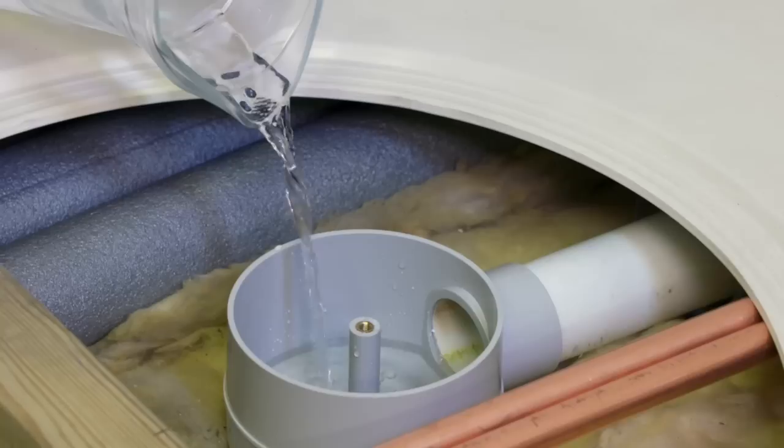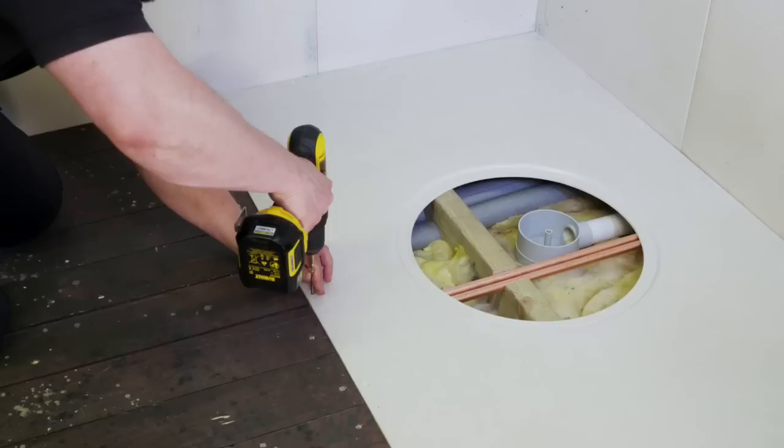Apply solvent weld to the drain outlet and waste pipe. Once this is secured, pour a quantity of water down into the sump so that the water exits into the waste pipe. In this instance we're using a horizontal drain, however vertical versions are available.